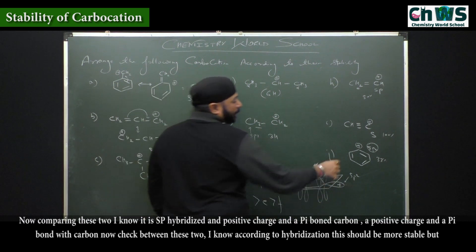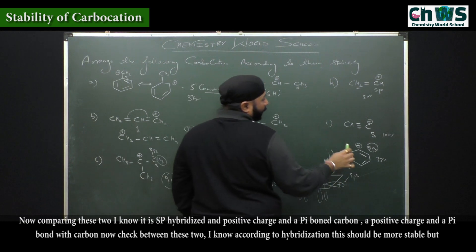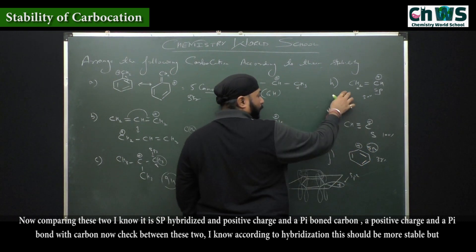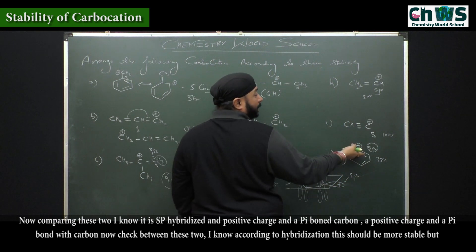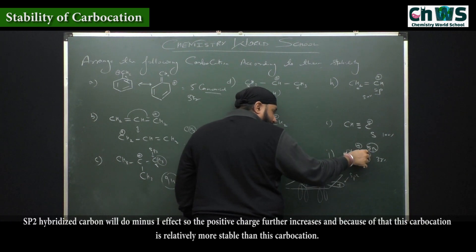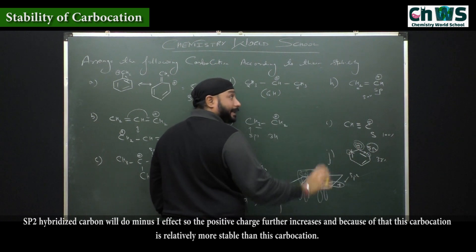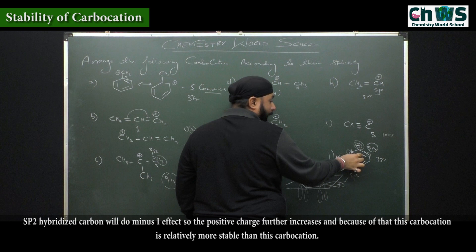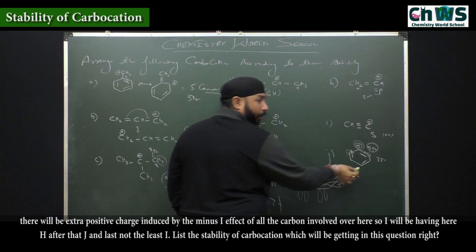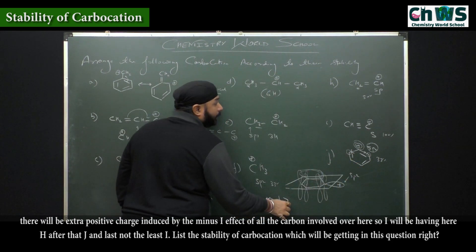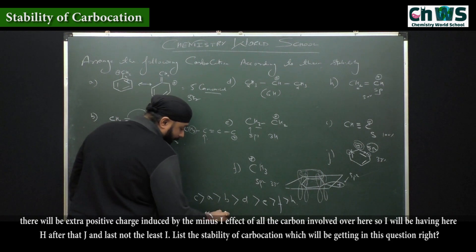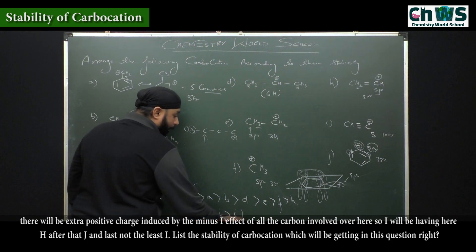So I'll be having F here. Now comparing the remaining two: one is sp hybridized. A positive charge on a pi-bonded carbon — check between these two. According to hybridization alone this should be more stable, but this carbocation is attached to a further sp2 hybridized carbon which will exert a minus-I effect, increasing the positive charge further, making it relatively more stable. So I have H, then J, and last I.